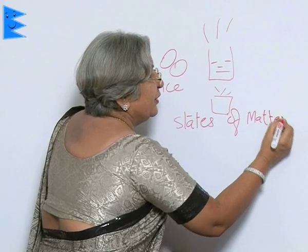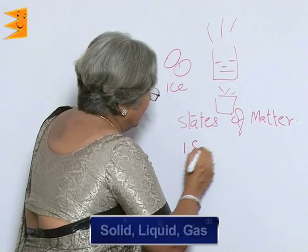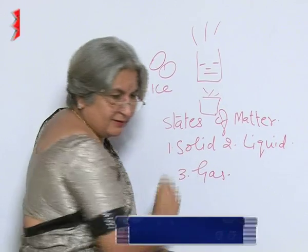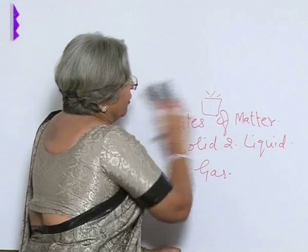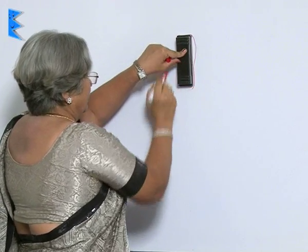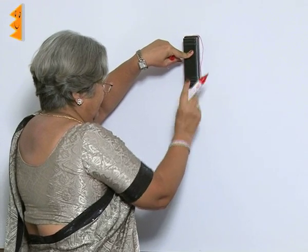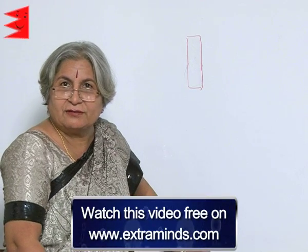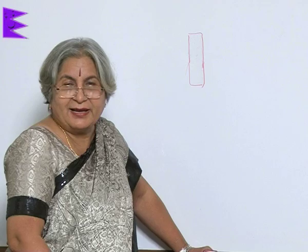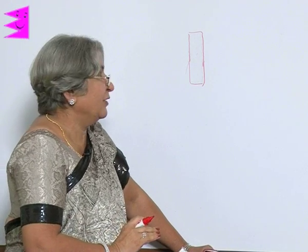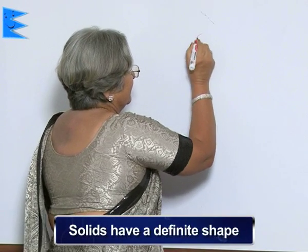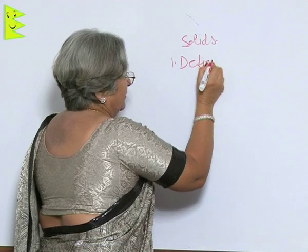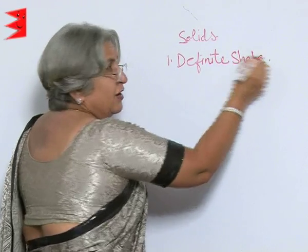We know that matter can exist in three states: solid, liquid, and gas. Now let's take the case of this duster. If I want, I can just draw around it and get a shape. Can I do this with liquid, with water? I cannot. So, focusing on solids — solids have a definite shape. They also have a definite volume.